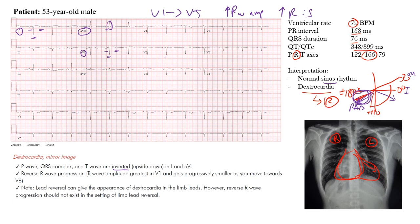In this case, you have poor R wave progression all the way across. The chest leads go from right to left, but if there's no heart there, they're picking up negative impulses going away from the electrode. That's why you see all these negative complexes. Reverse R wave progression — or simply poor R wave progression — is when the R wave amplitude is greatest in V1 and then absent in the lateral leads.